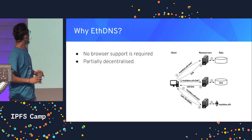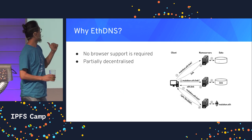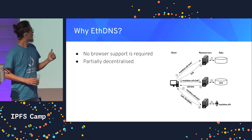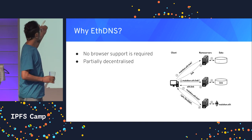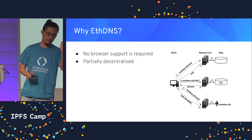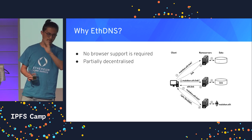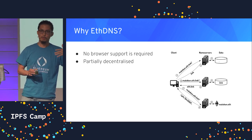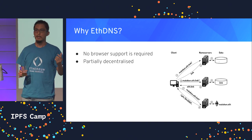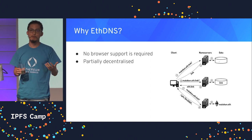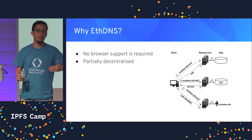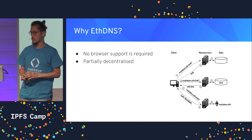And why do that? Three reasons. First, no browser support is required. Second, it's partially decentralized — everything below the dot in the .link portion is decentralized on the blockchain. Third, because it's a smart contract, the API is exposed by default, so anyone can integrate it into their application easily.